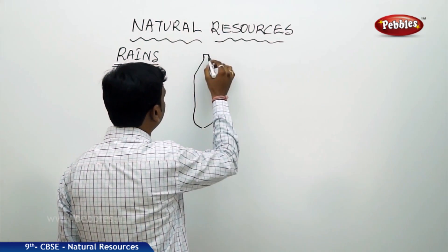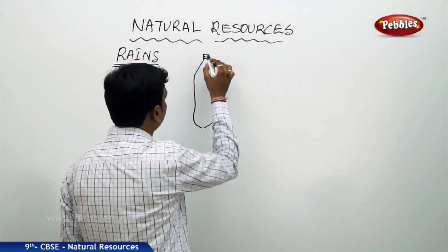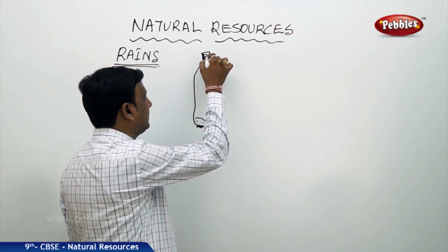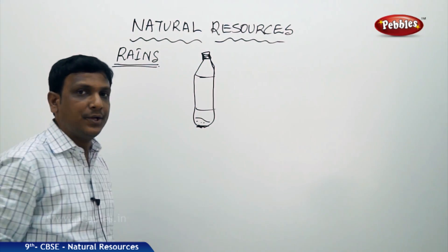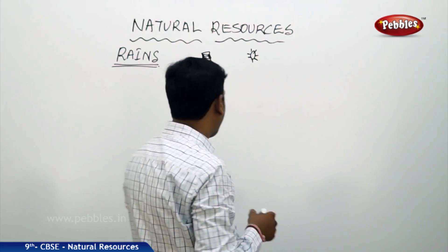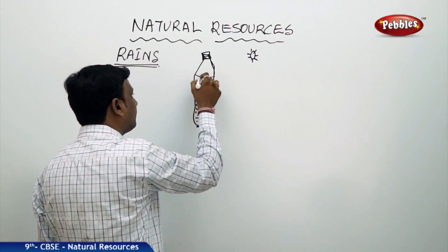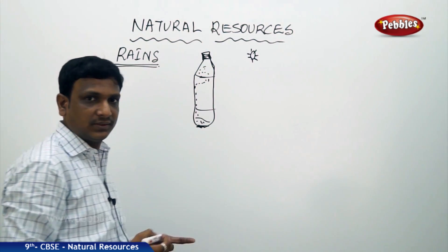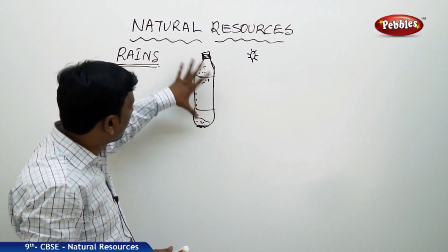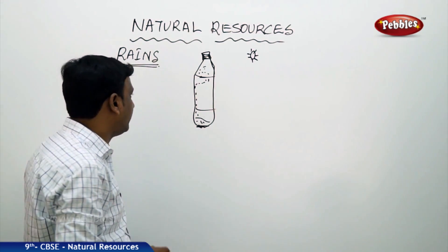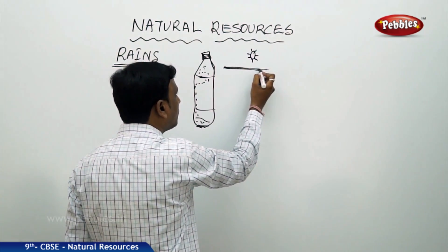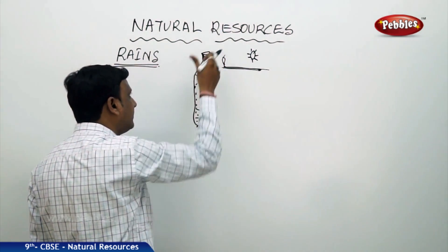Take a water bottle with about 5 to 10 ml of water, cap it tightly, and place it in the sun for 10 to 15 minutes. By then, the water becomes vapour and you can find some droplets attached inside. Now open the cap, put an incense stick inside to introduce some smoke into the bottle, and immediately close the cap.